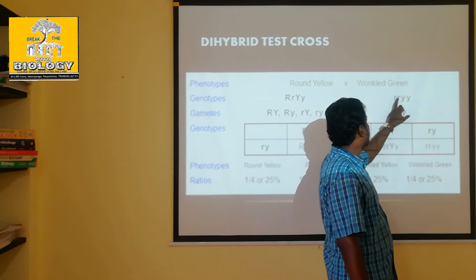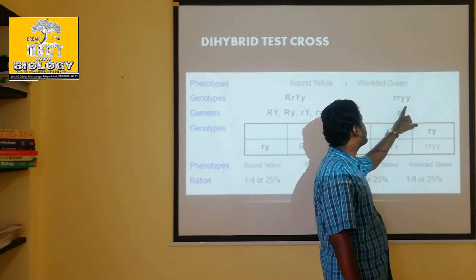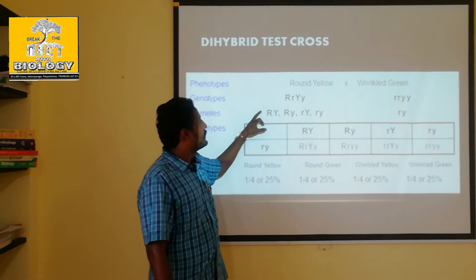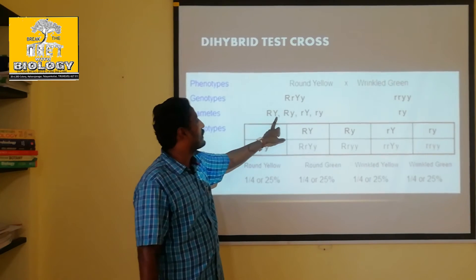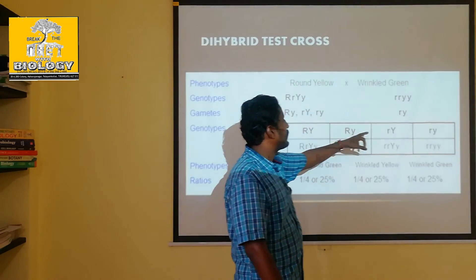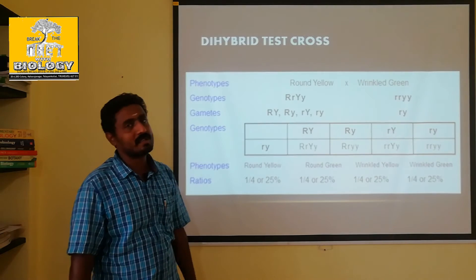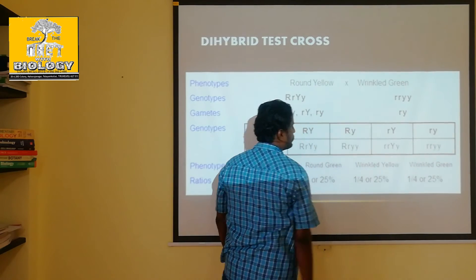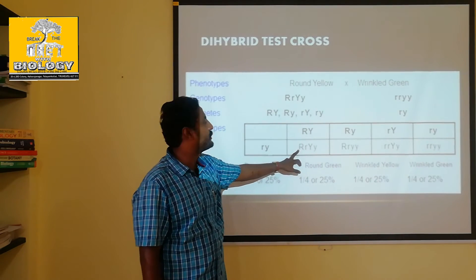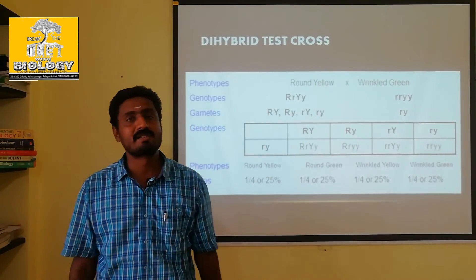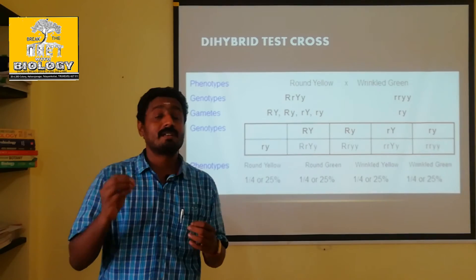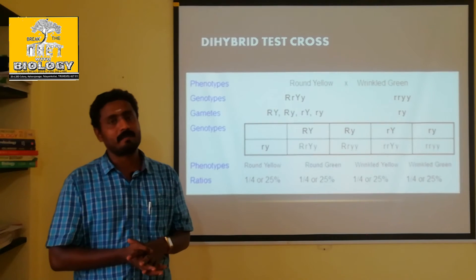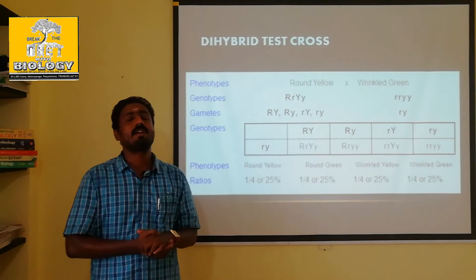The law of segregation: if we study the individual with dihybrid cross, the genotype R, Y — R, Y produces gametes. There are four types of gametes. So if we use this, we can use a round yellow individual that produces 100 individuals. If you look at 100, you can use round yellow. If you look at the parent's genotype R, R, Y, Y — that is homozygous.